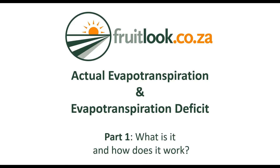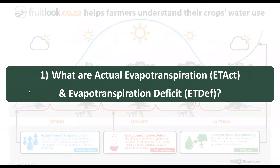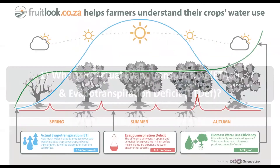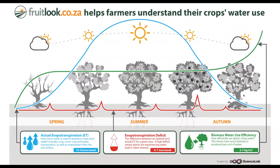Today we will be looking at two Fruit Look moisture parameters. Firstly, we will look at what these two evapotranspiration parameters are. Fruit Look helps farmers understand their crops' water use through these moisture parameters.